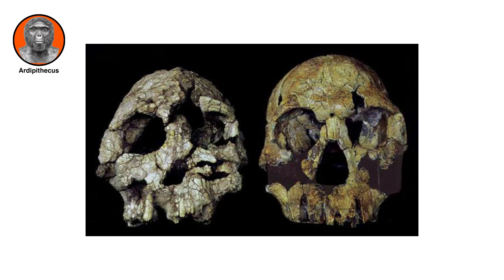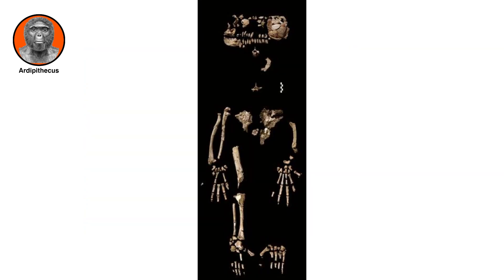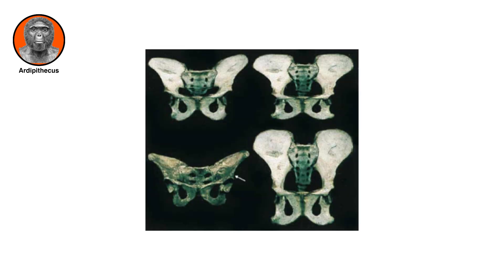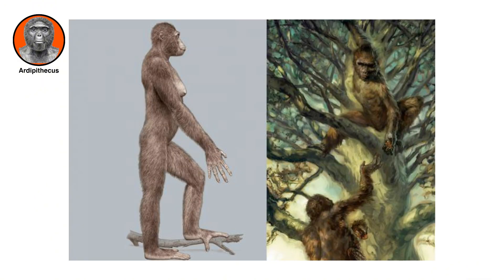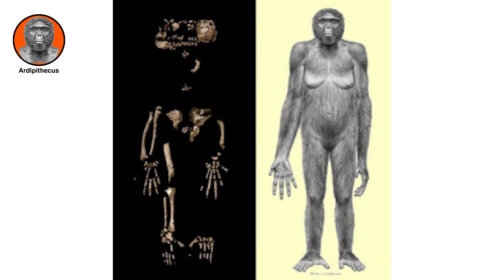Ardipithecus was first reported in 1994. In 2009, scientists announced a partial skeleton, nicknamed Ardi. The foot bones in this skeleton indicate a divergent large toe combined with a rigid foot. The pelvis, reconstructed from a crushed specimen, is said to show adaptations that combine tree climbing and bipedal activity. The discoverers argue that the Ardi skeleton reflects a human African ape common ancestor that was not chimpanzee-like.